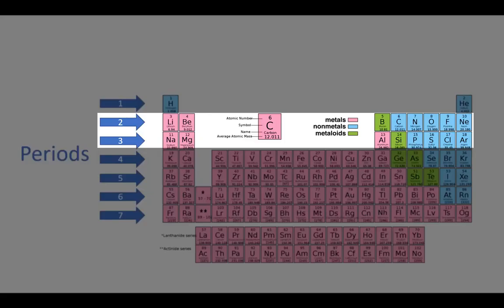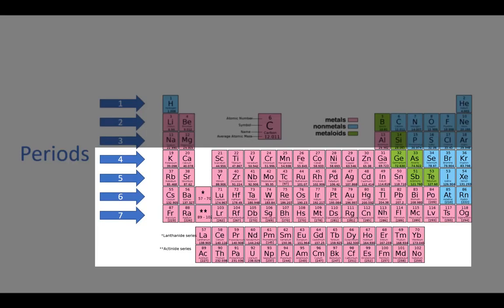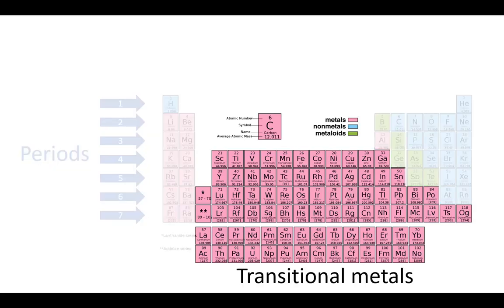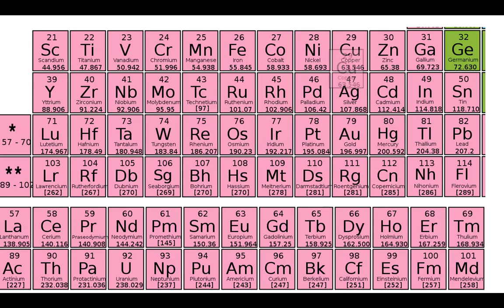Periods 2 and 3 each have 8 elements in them. And then from period 4 onward, there are more than 8 elements per period. And those in-between elements are called the transitional metals.